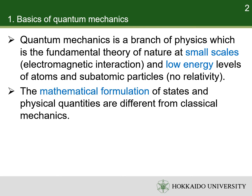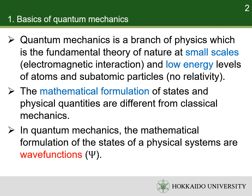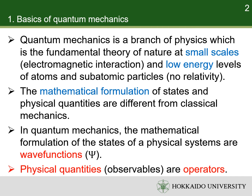The biggest difference between classical mechanics and quantum mechanics is their mathematical formulations of states and physical quantities. In quantum mechanics, the mathematical formulations of the states of the physical systems are wave functions, while the mathematical formulations of the physical quantities, also known as observables, are operators.